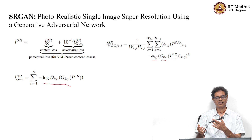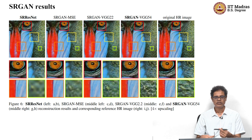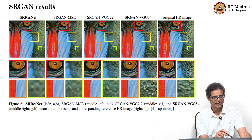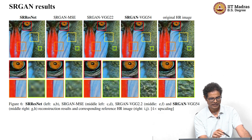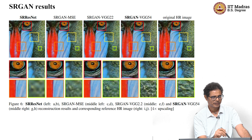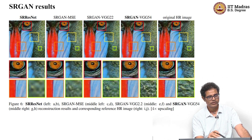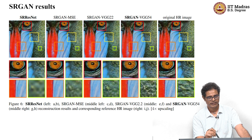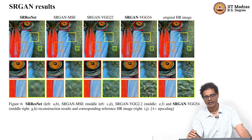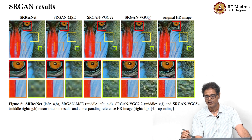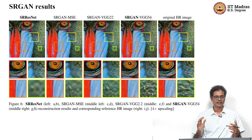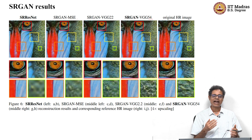Results show that SRResNet using only MSE loss produces very blurred output. SRGAN with MSE content loss still shows blurring. SRGAN with VGG content loss is better, and it matters which VGG layer is used — layer 5,4 is the best. The ground truth is shown for comparison. Overall, SRGAN is a GAN-based network capable of producing photorealistic super-resolved images.